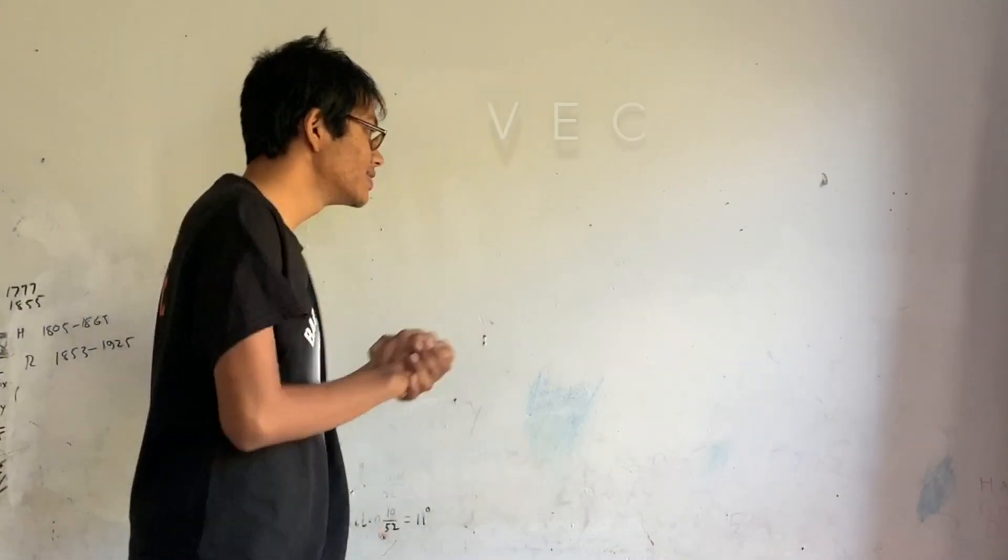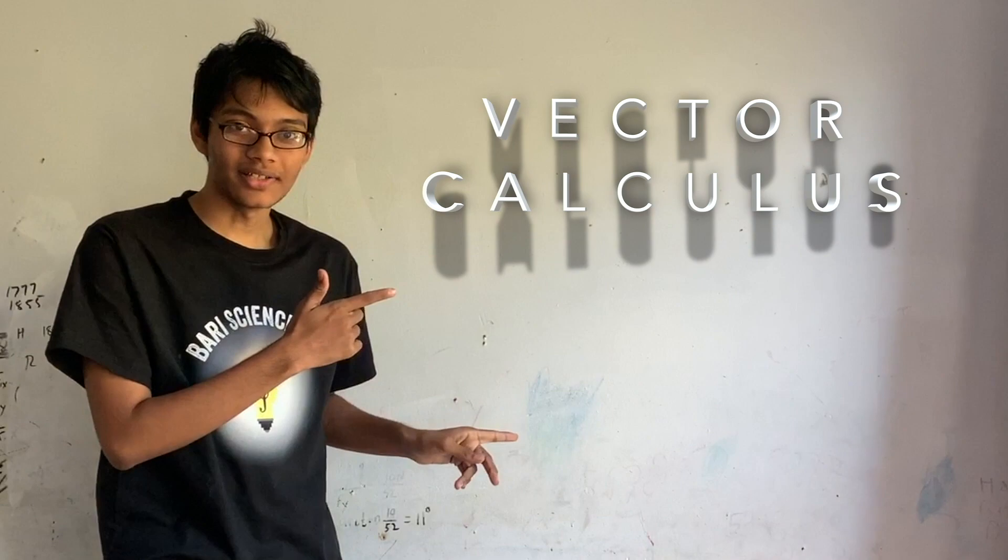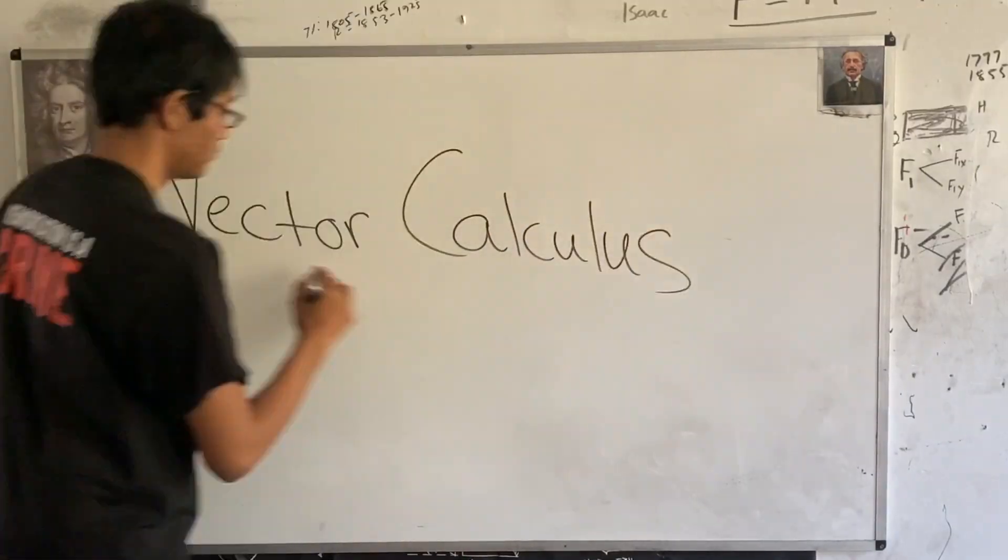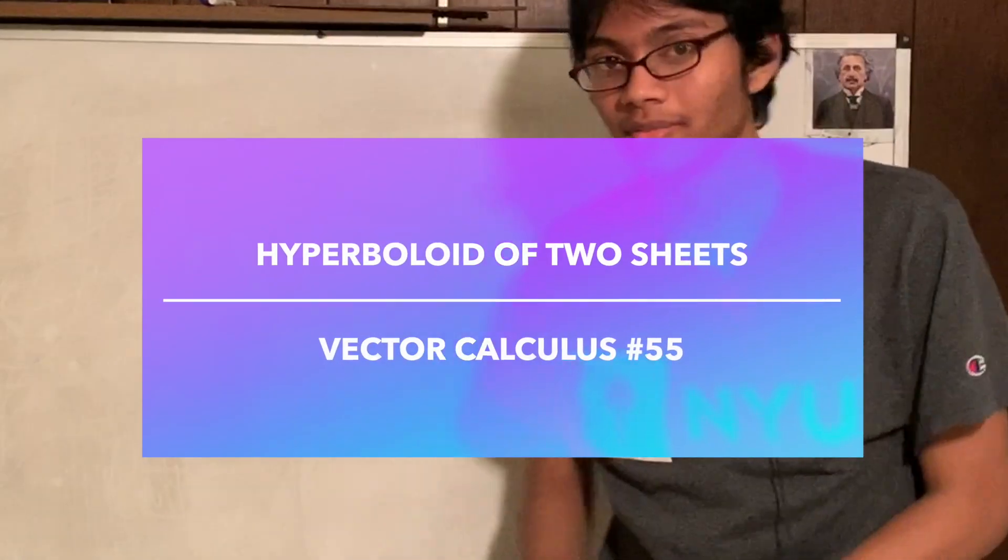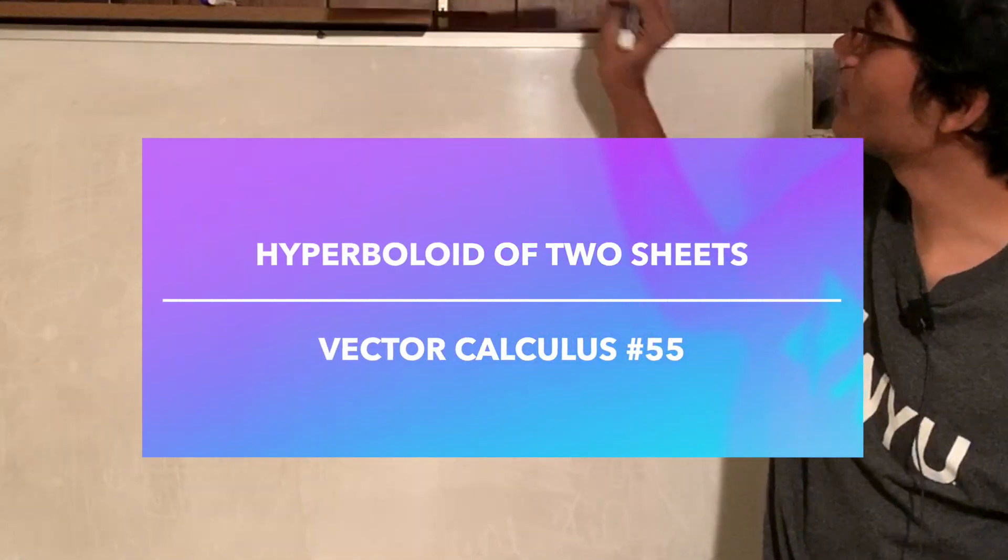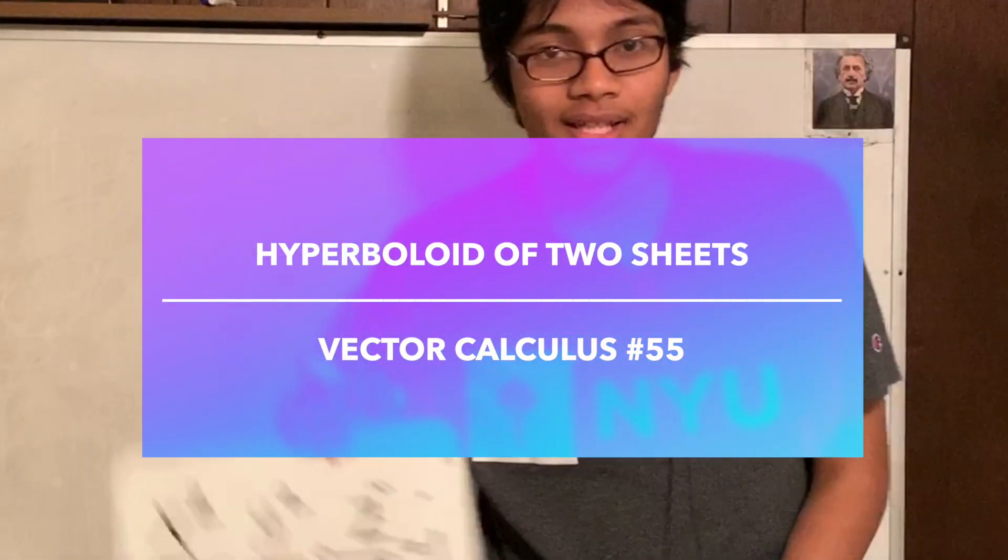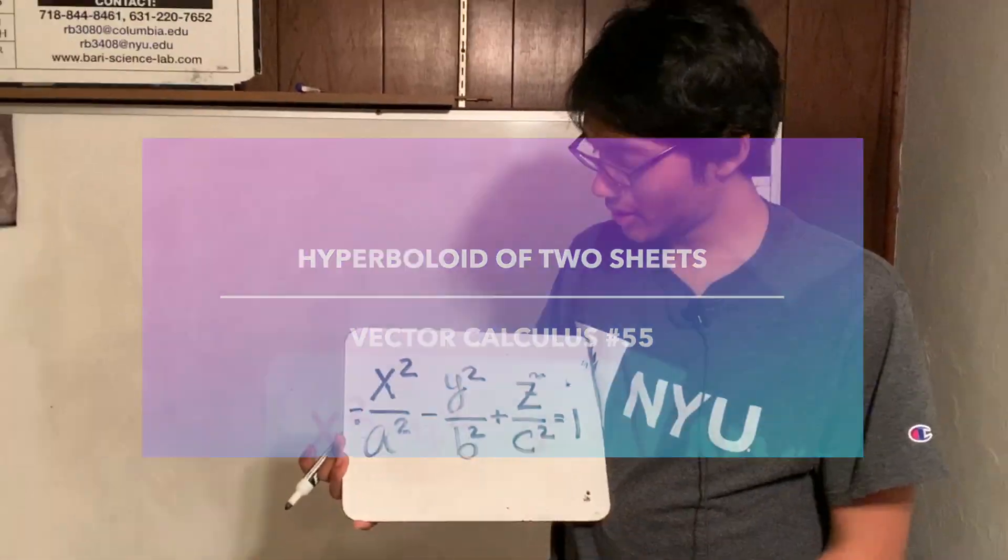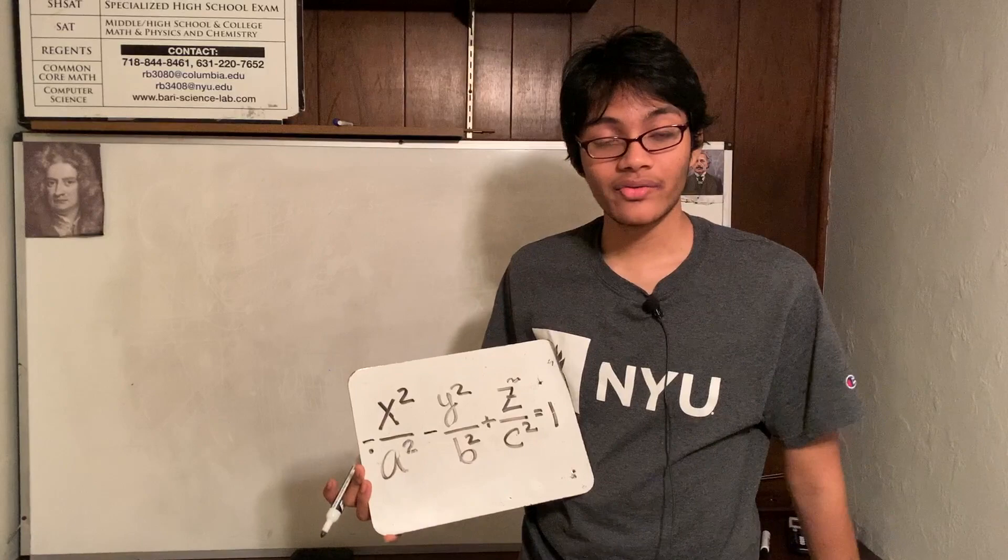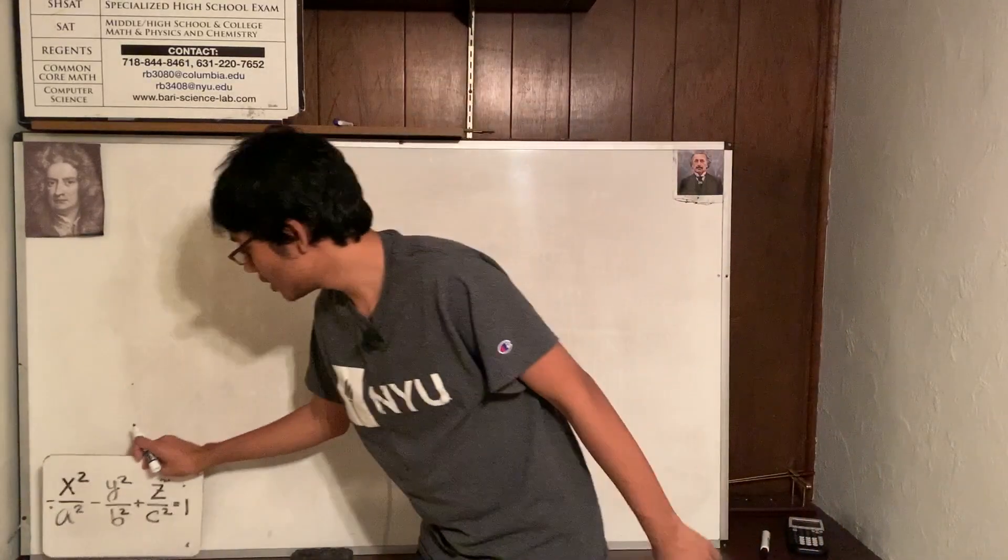Folks, welcome to Vector Calculus. What's up ladies and gentlemen, today we're gonna take a look at our final quadric surface. This guy, negative x squared over a squared, minus y squared over b squared, plus z squared over c squared, all equals 1.